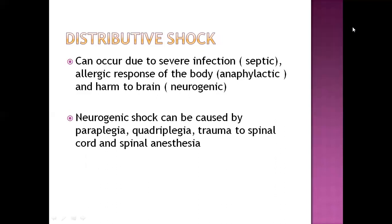Distributive shock can occur due to severe infection of the body such as septic infection, also an allergic response of the body which is anaphylactic, and harm to the brain which is neurogenic. Neurogenic shock can be caused due to paraplegia, quadriplegia, and trauma to the spinal cord. Paraplegia is loss of movement of the lower extremities, while quadriplegia is loss of movement of all four extremities.